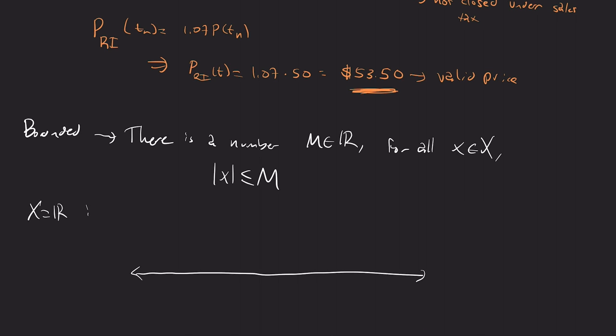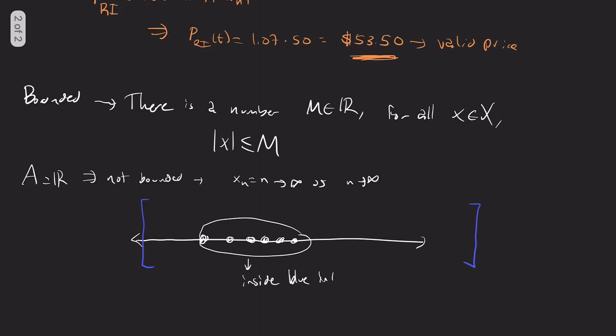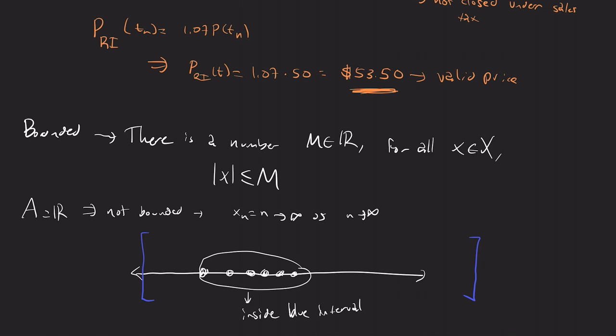So for example, if a is equal to R, this is not bounded, because I can take the sequence xn equals n, and that goes to infinity as n goes to infinity. What it basically means is you just have a ton of points here, and I can throw an interval of this form, and all of them remain, all these remain inside the blue interval here. And that's all there really is to boundedness.